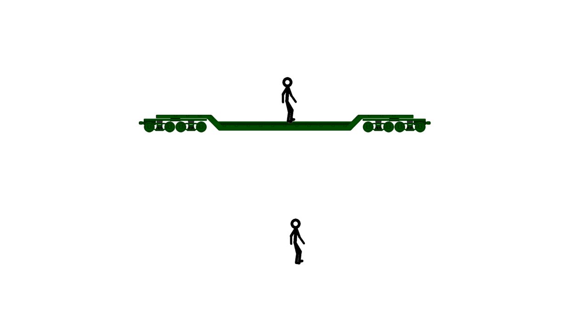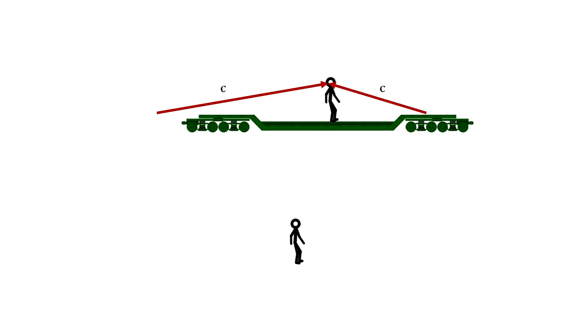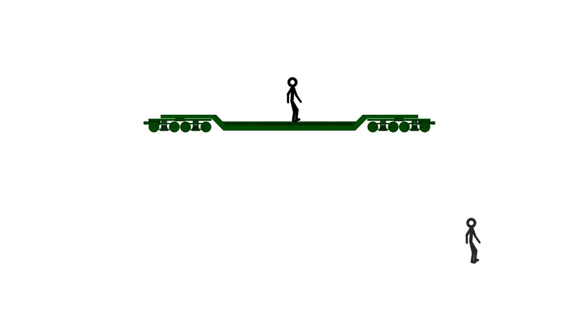The person on the ground also notes that the light from both strikes travels to the person on the train at the same speed, but because the person on the train is moving in the direction of the front lightning strike, it doesn't have as far to go, and therefore it reaches him first.